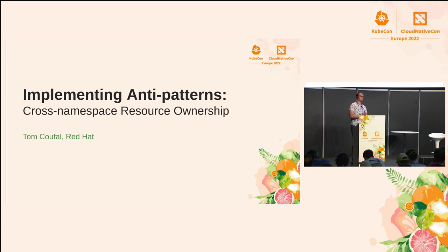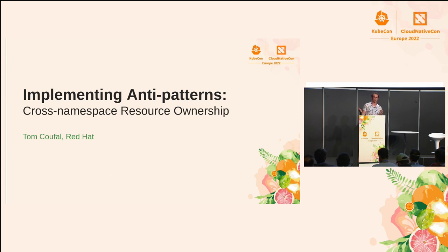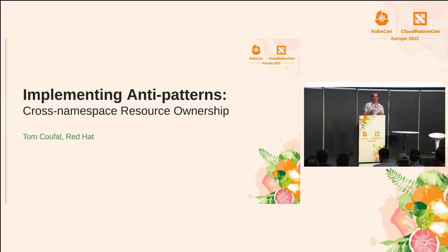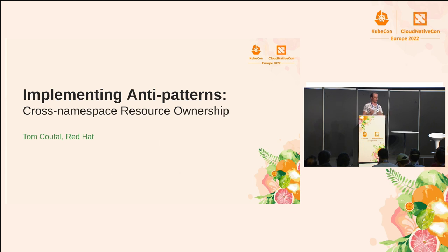So what we're going to do today: I'm going to talk about some Kubernetes concepts that we usually use and see, like ownerships, dependents, namespaces, garbage collection, and the rules that go with those concepts. Then we're going to try to exploit and implement some forbidden stuff that Kubernetes disallows in the documentation and in the implementation. We're going to bend the rules so it fits our very anti-patternish, wrong use case that I'm going to try to justify to you.